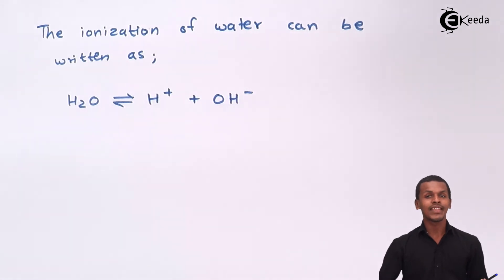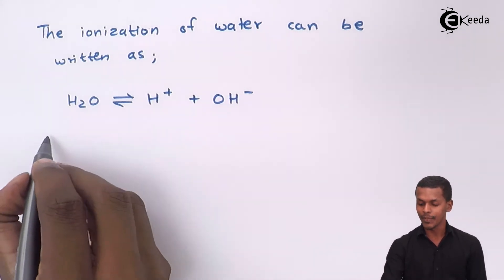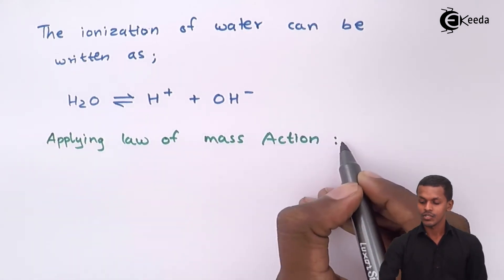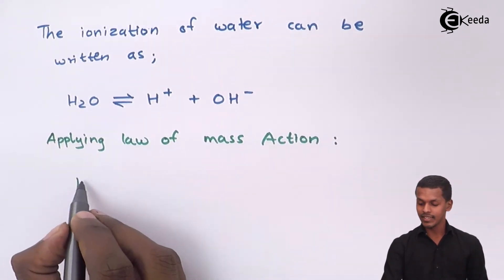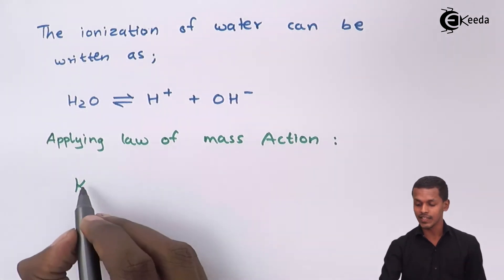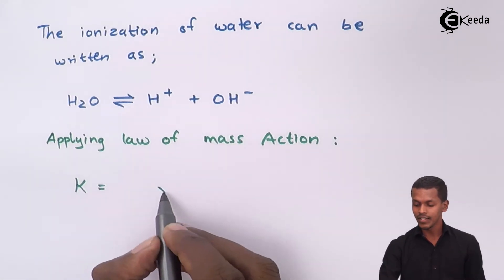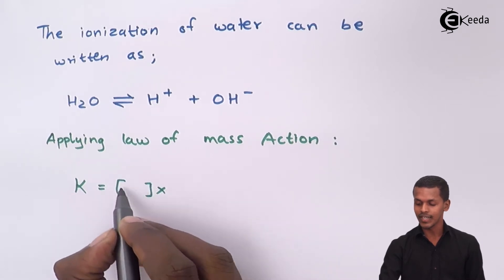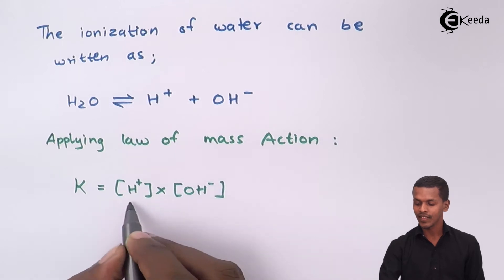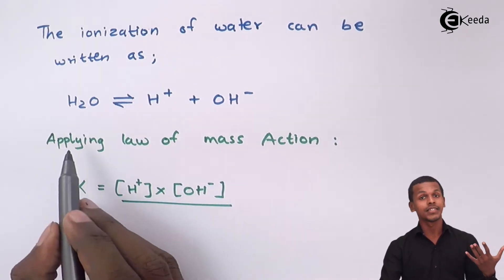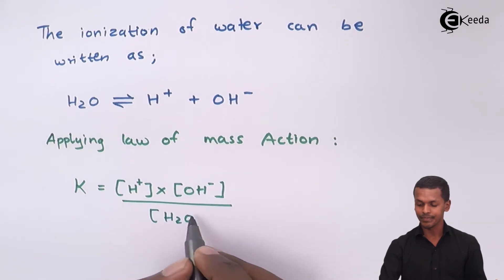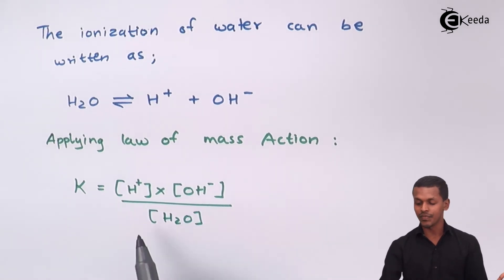Now, if we apply the law of mass action, we get the dissociation constant or equilibrium constant K. K is nothing but the product of the concentrations of the products — that is, H⁺ and OH⁻ — divided by the concentration of H₂O.